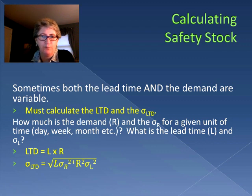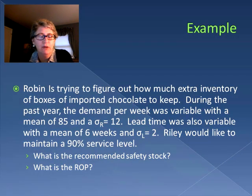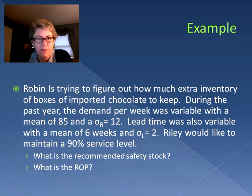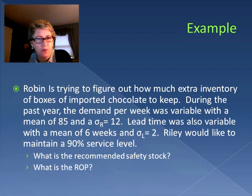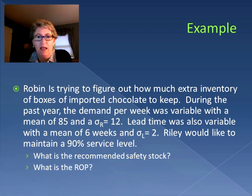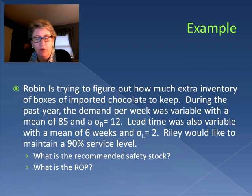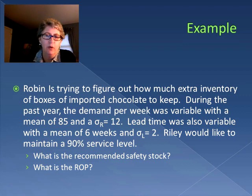Here's an example: Robin is trying to figure out how much extra inventory of boxes of imported chocolate to keep. During the past year, demand per week was variable with a mean of 85 and a standard deviation of 12. Lead time was also variable with a mean of 6 weeks and a standard deviation of 2. We have values for demand and its standard deviation, and for lead time and its standard deviation. The service level is again 90%, and we want to calculate the safety stock and reorder point.